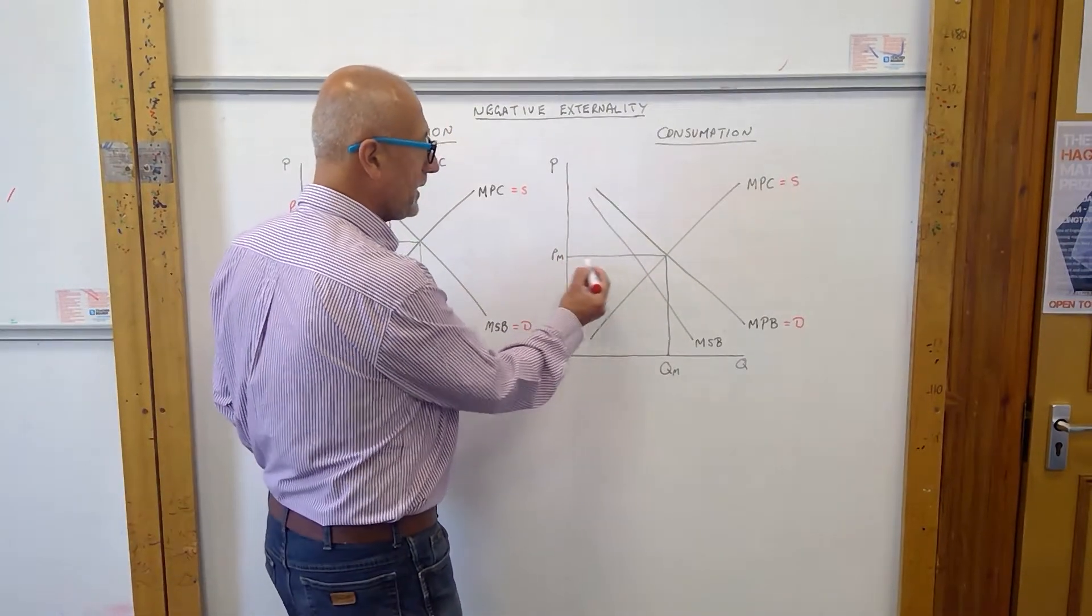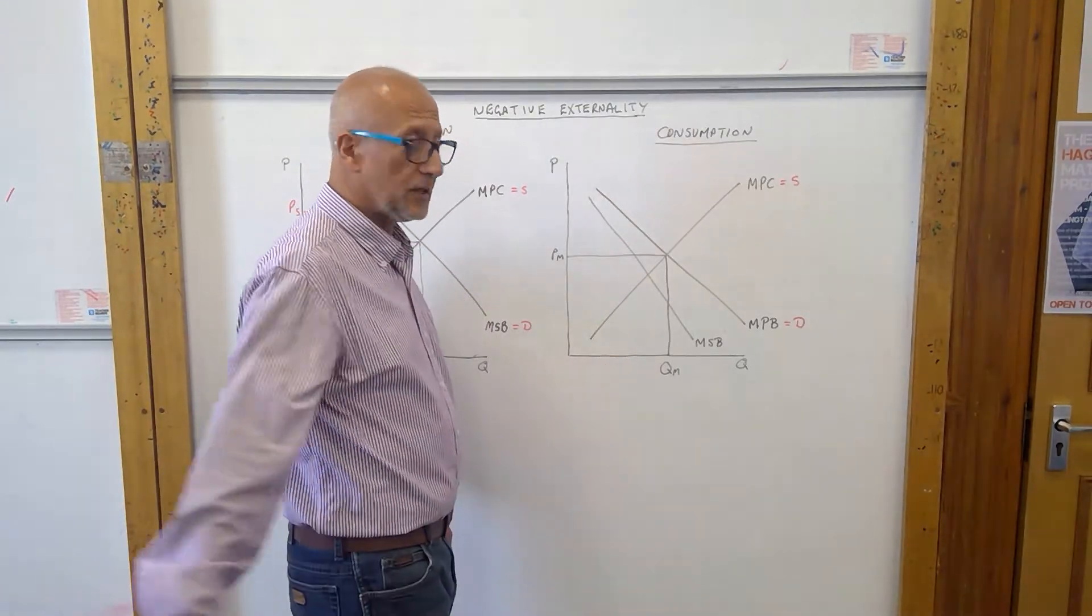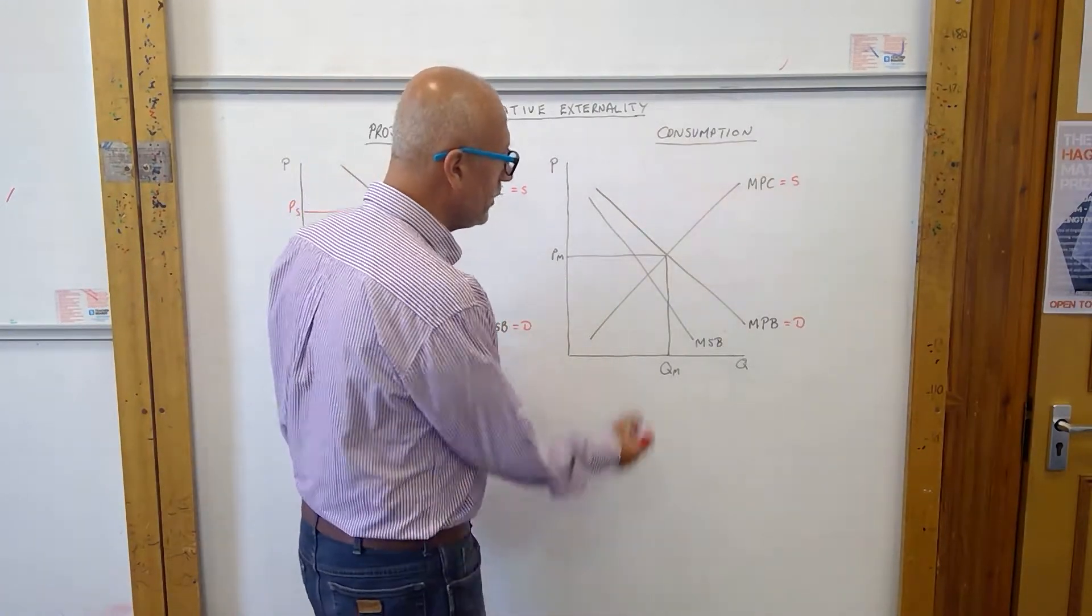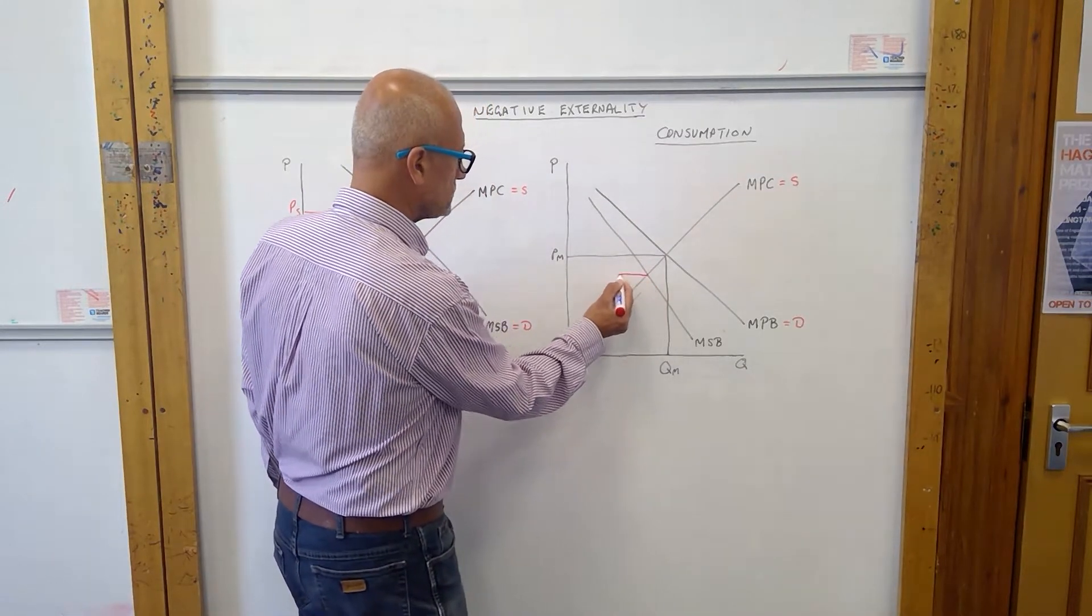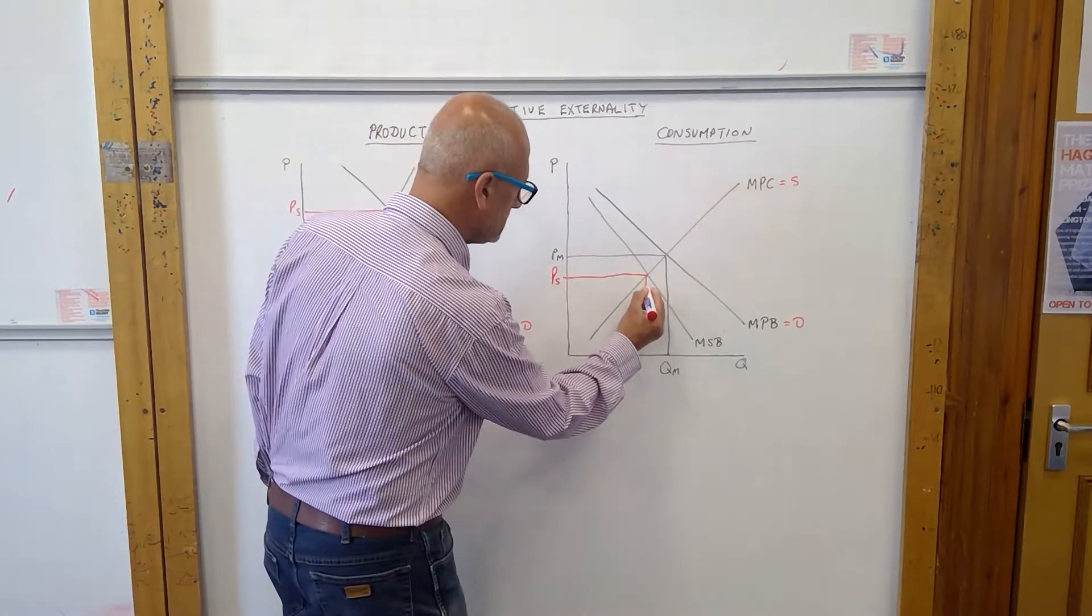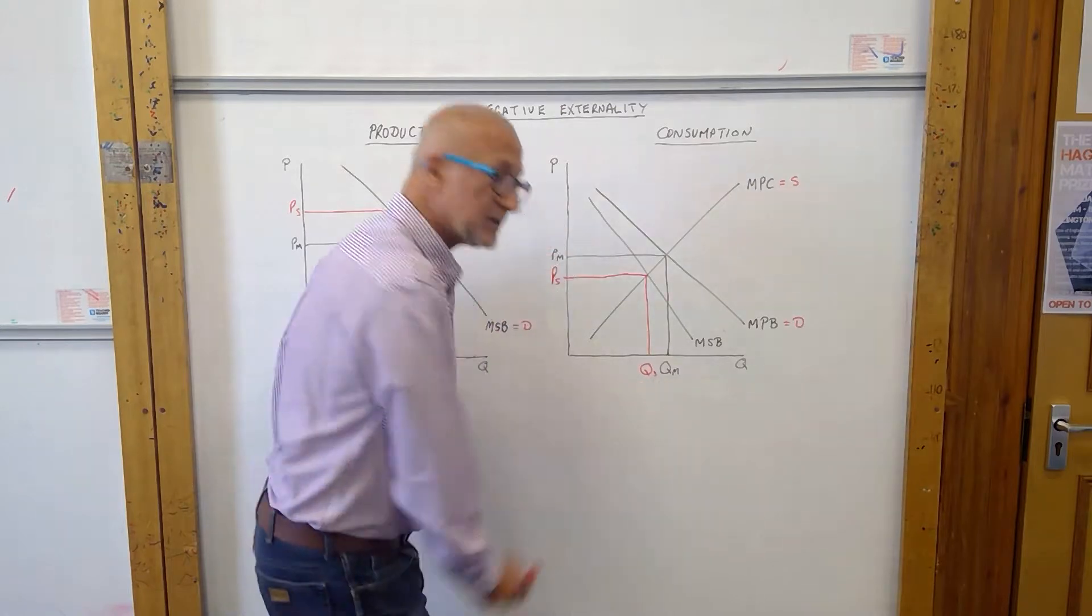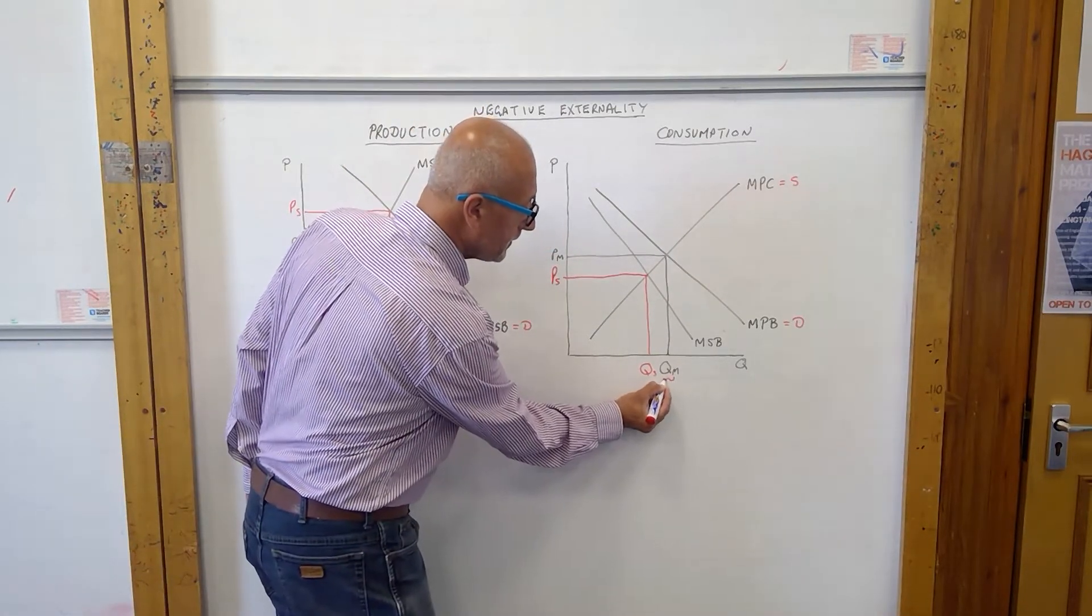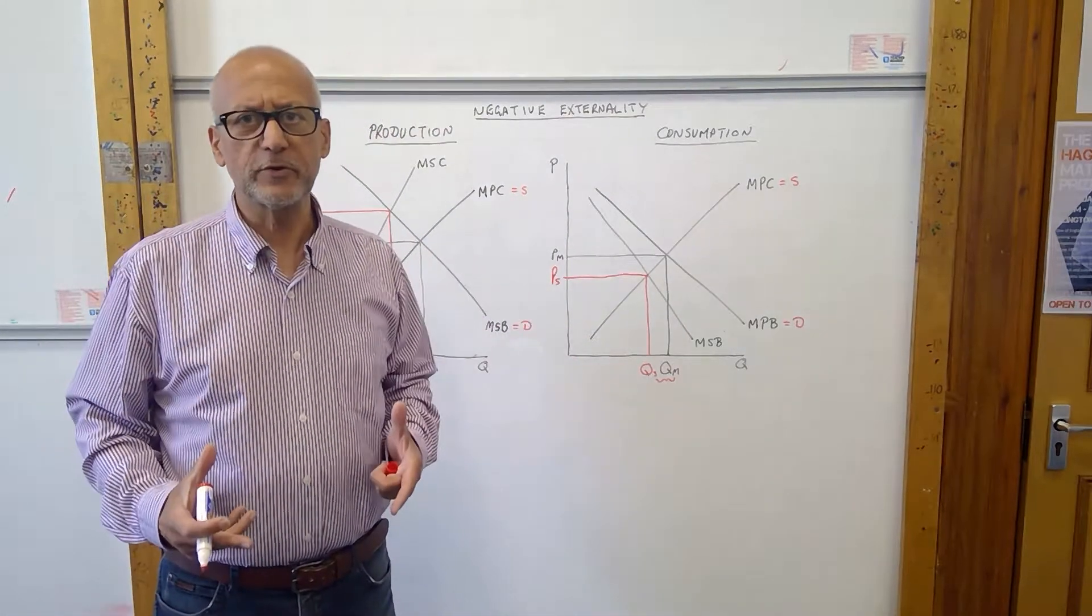In this particular case, the market is charging that price and producing that much. Society, however, wants this to be the equilibrium point. It wants the ideal quantity to be that. And again, rather like the first diagram, we have an overproduction.